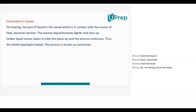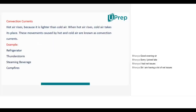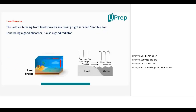In convection in liquids: on heating, the part of liquid in contact with the heat source becomes warmer, that warmer liquid becomes lighter and rises up. Hot air rises because it is lighter than cold air, and when hot air rises, cold air takes its place. This movement of hot and cold air is known as convection currents.